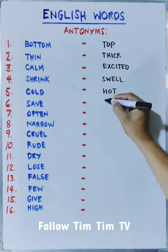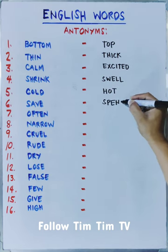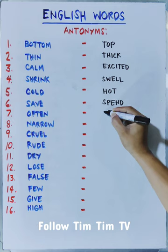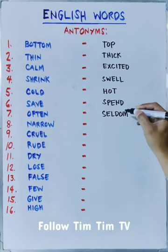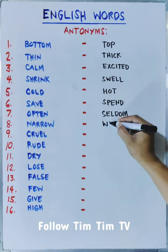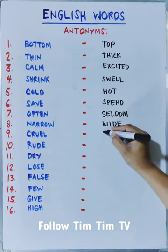Save is spend. Often is seldom. Narrow is wide. Cruel is kind.